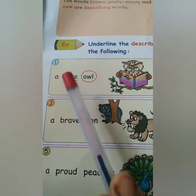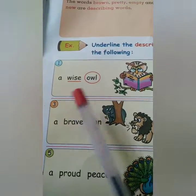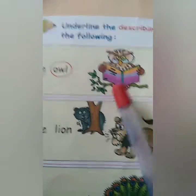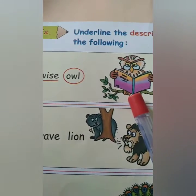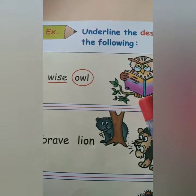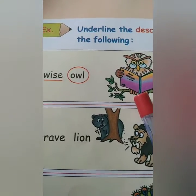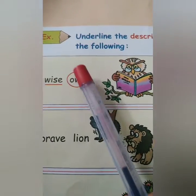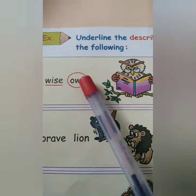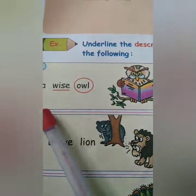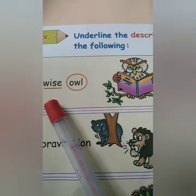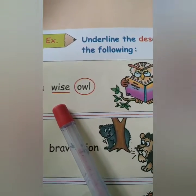Question: Underline the describing words and circle the naming words in the following. First example: a wise owl. Look at here — it is the owl's picture. We are talking about owl, so owl is the naming word. You have to circle the naming word and underline 'wise', because wise is the describing word here.